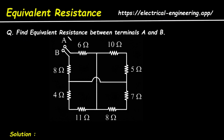Question: Find the equivalent resistance between terminals A and B. For this network we have to determine its equivalent resistance.